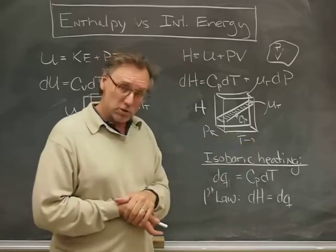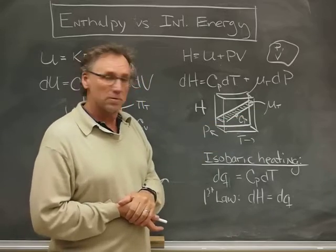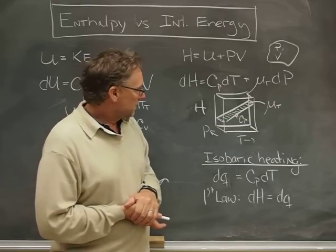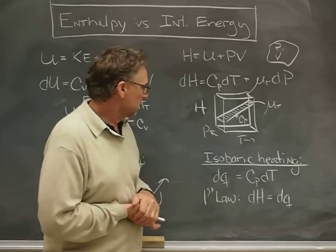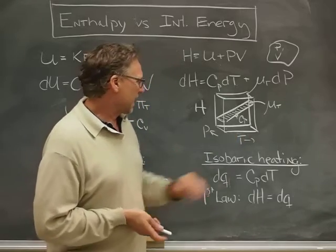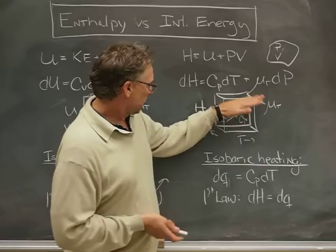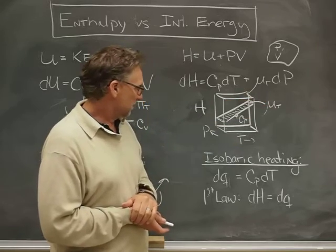The slope in the pressure direction is a new quantity called μ sub t. That's the isothermal Joule-Thomson coefficient. Similarly, for an ideal gas, μ sub t is zero and that surface is flat in the pressure direction.